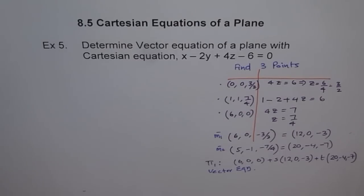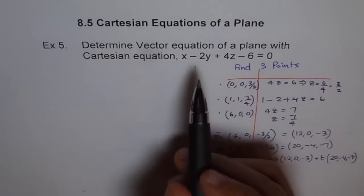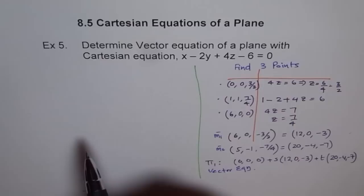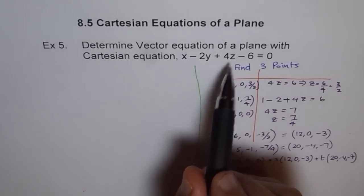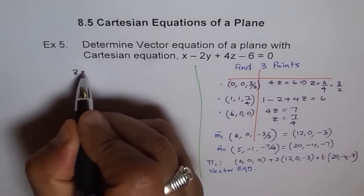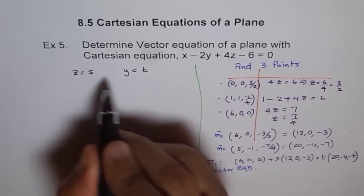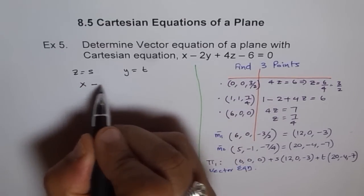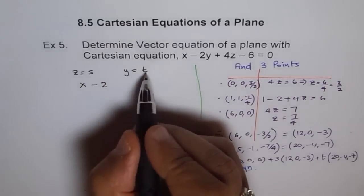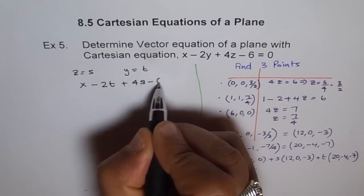Now, the other method to do this is kind of using parameters. That is kind of a tricky way of doing it, but it is a very effective way of doing it. As you learned, this is a Cartesian equation and what we can do is we can assign some value to Z. We can say let Z equals S and let Y equals T. If we have Z as S and Y as T, then what is X equals to? We will solve for X. We will say X minus 2 times Y is T, so 2 times T plus 4 times S minus 6 equals 0.